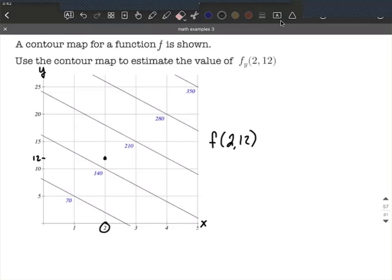So the contour mapping here, you can see that we have 140 is this line going across here, and 210 is this line going across here. So we're fitting somewhere in between 140 and 210.